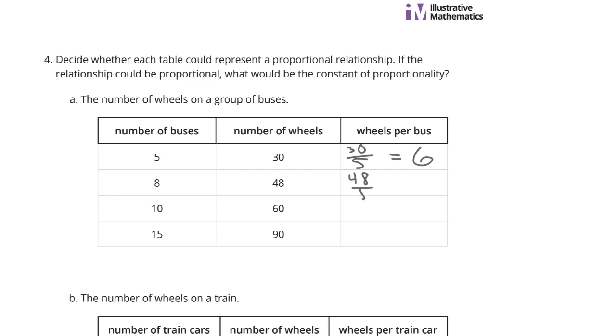So does 48 divided by 8. That is 6 as well. Take the wheels that are 60 there. Divide by 10 because that's the number of buses. 60 divided by 10 is the number 6. Here we go. 90 divided by 15 is also 6. So that is proportional. And our constant of proportionality would be the number 6.